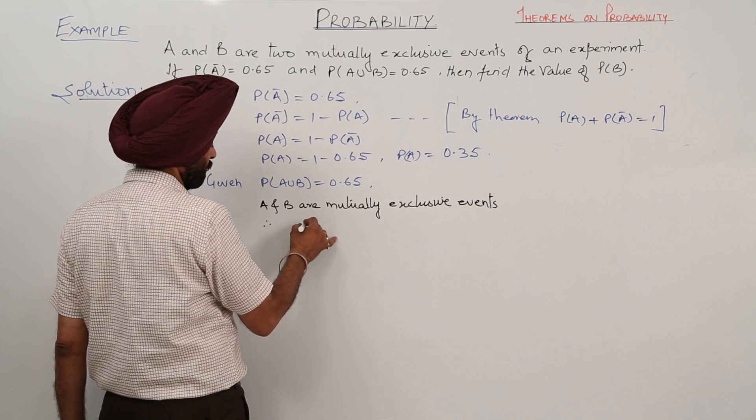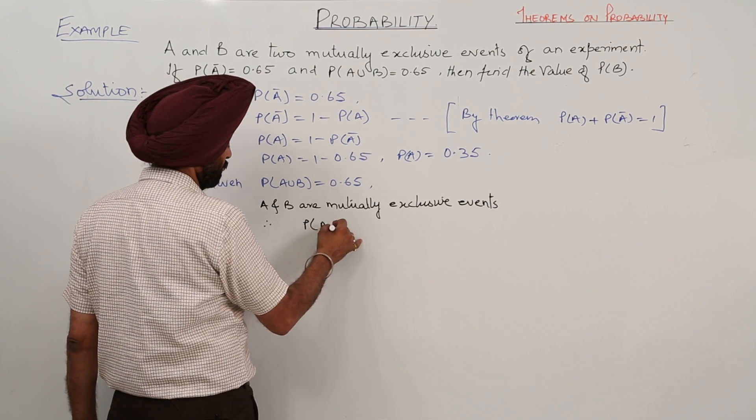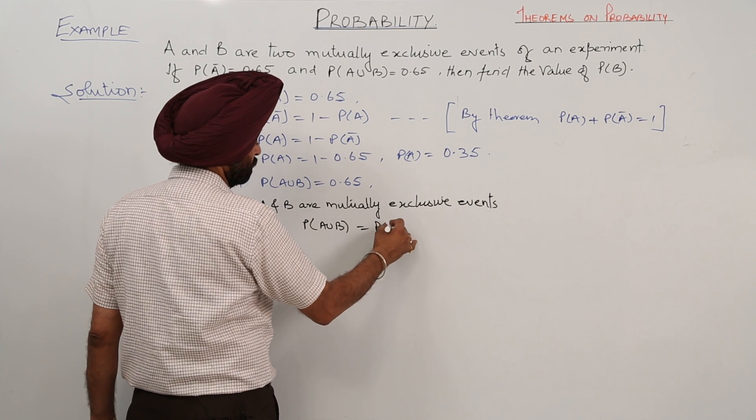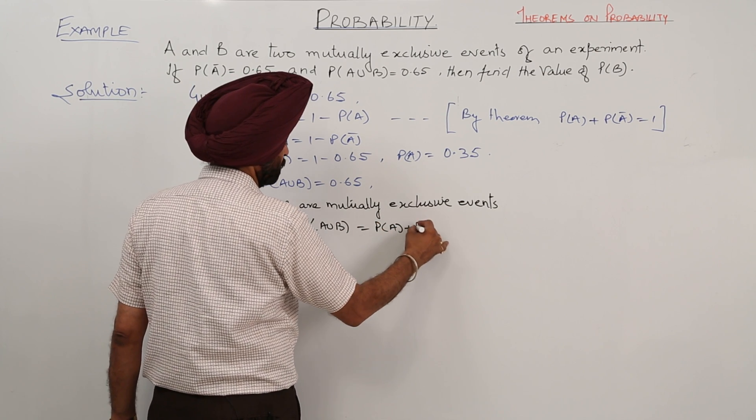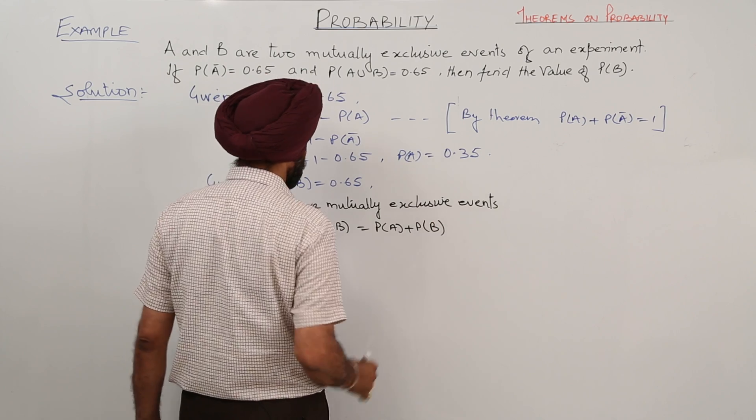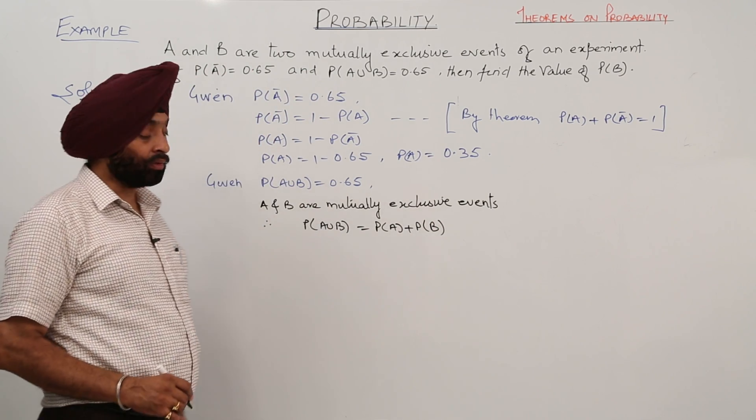Therefore, P(A or B) is equal to P(A) plus P(B), where A and B are the events and P stands for probability.